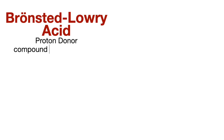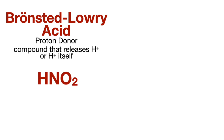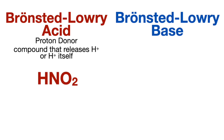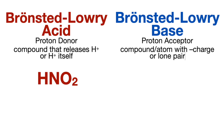A Bronsted-Lowry acid is also a proton donor — a compound that releases H+ or H+ itself. An example is nitrous acid. A Bronsted-Lowry base is a proton acceptor, meaning a compound or atom with a negative charge or lone pair that can form a bond with a proton. An example is methoxide, which has a negative charge, which actually indicates an extra lone pair, which is very attractive to positively charged ions, especially a proton.